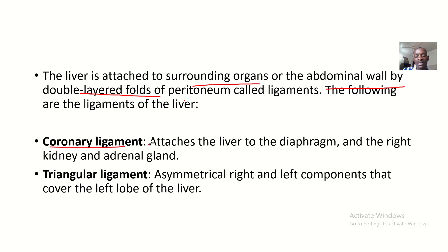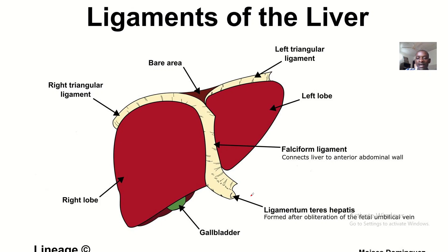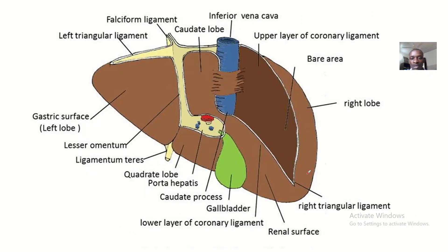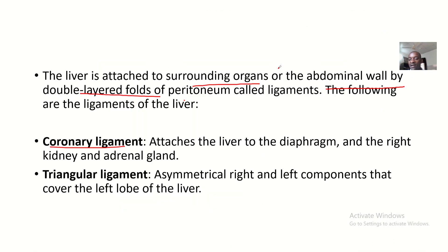The first one is the coronary ligament. The coronary ligament attaches the liver to the diaphragm, and also to the right kidney and the adrenal gland. You can see the upper layer of the coronary ligament on top of the liver, attaching it to the diaphragm, left kidney, and the adrenal gland.